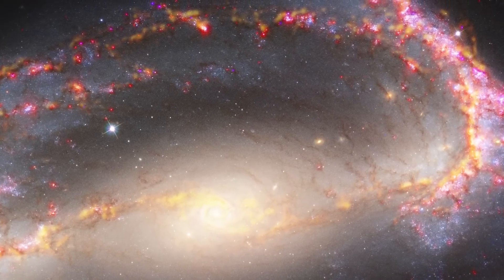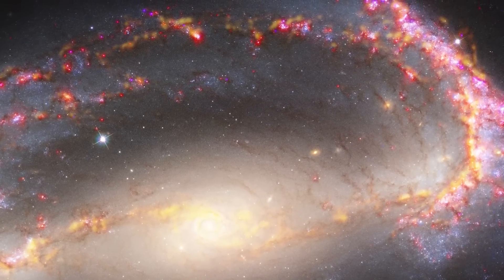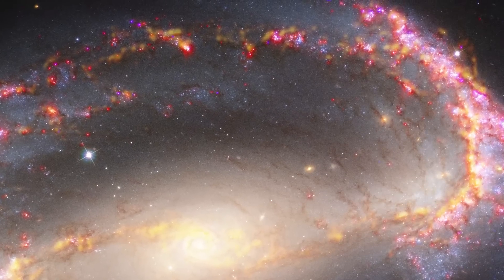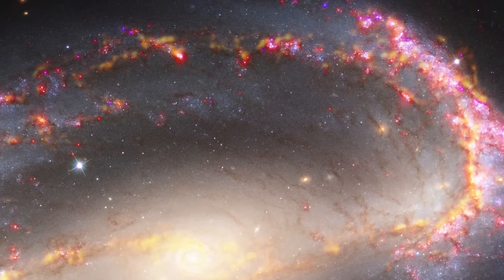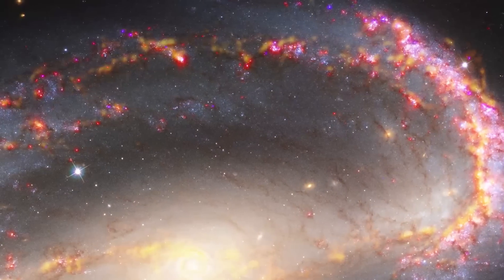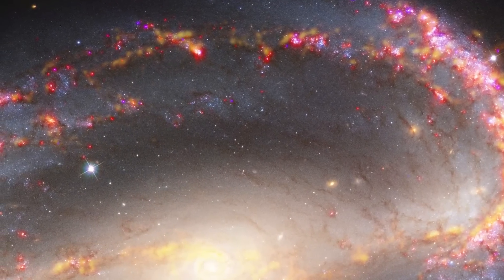Data from the multi-unit spectroscopic explorer Mu's instrument on the Very Large Telescope, displayed in red and magenta, reveal how young, massive stars impact the surrounding gas.